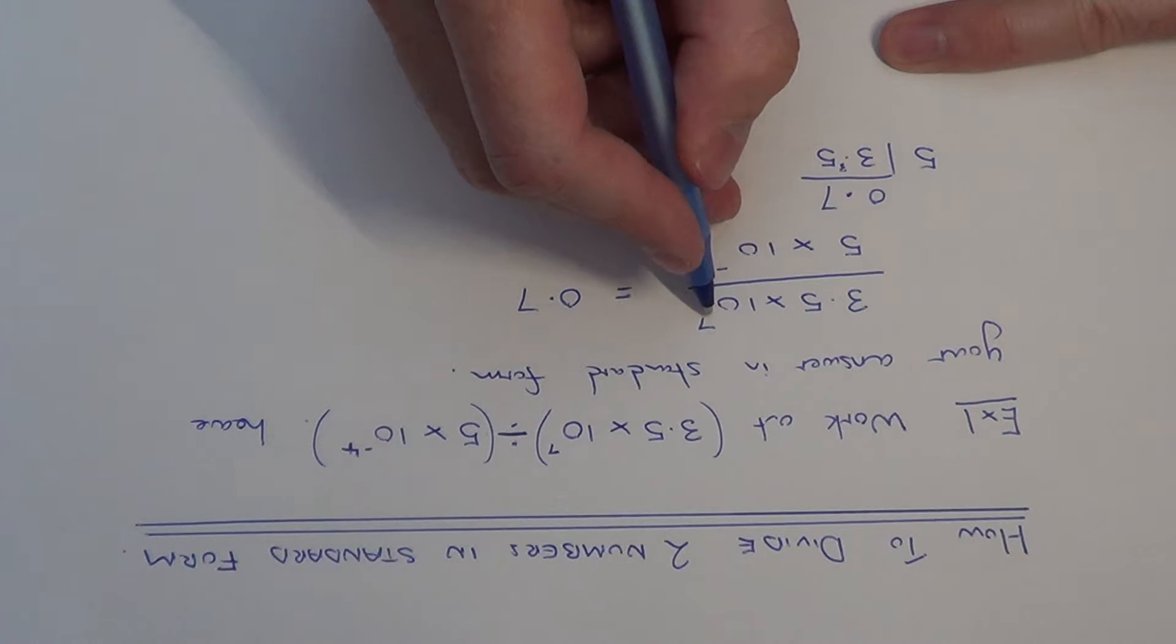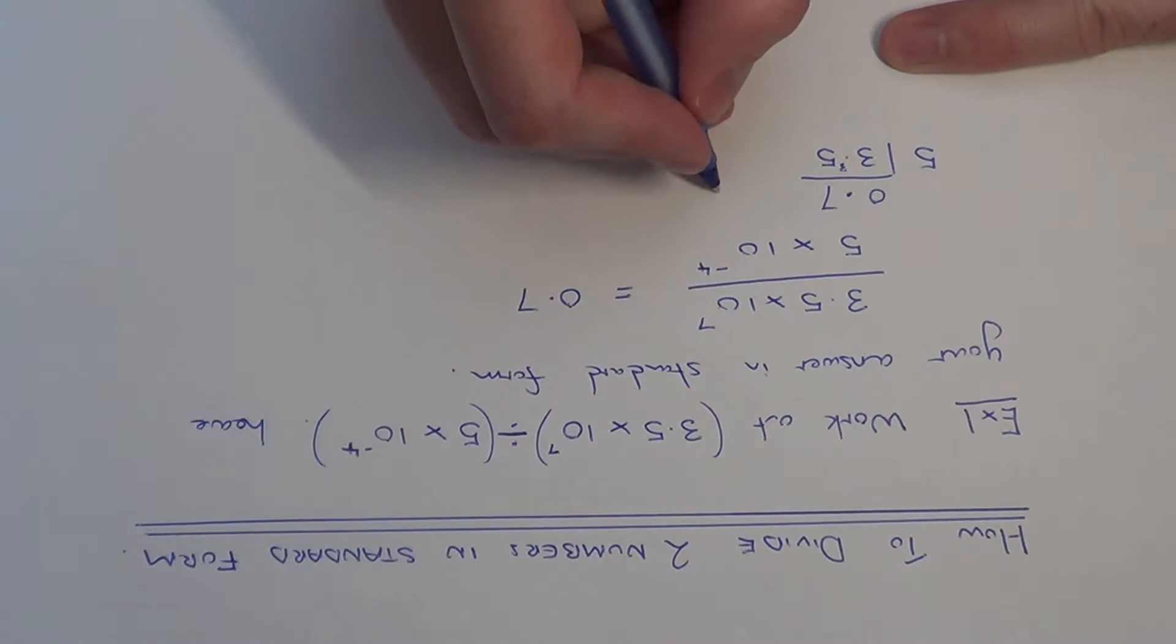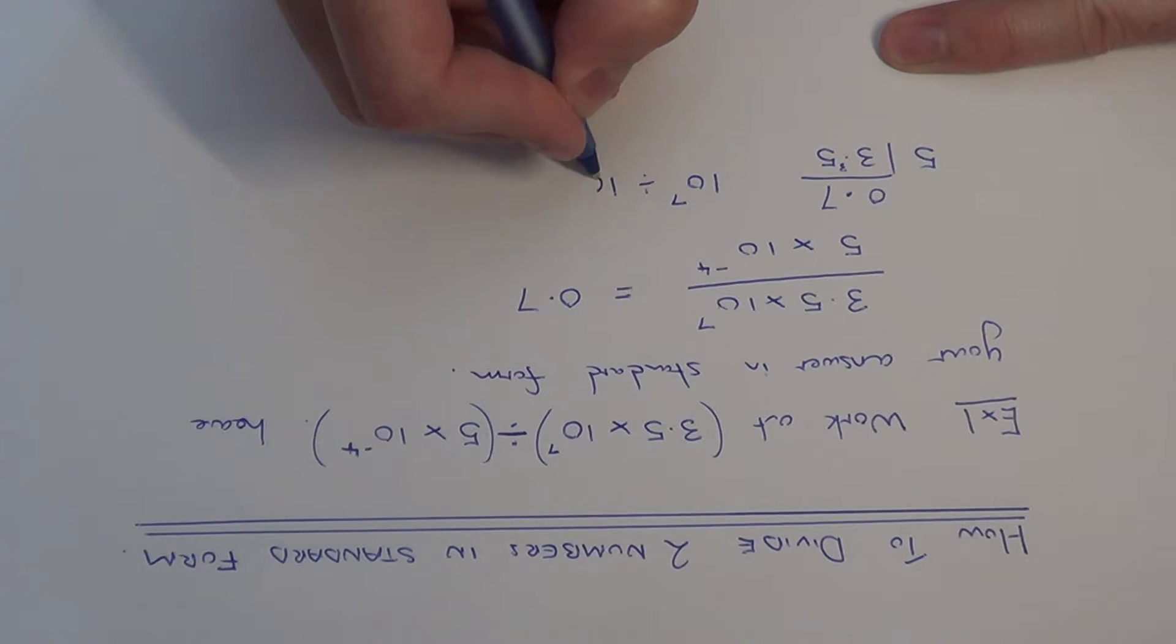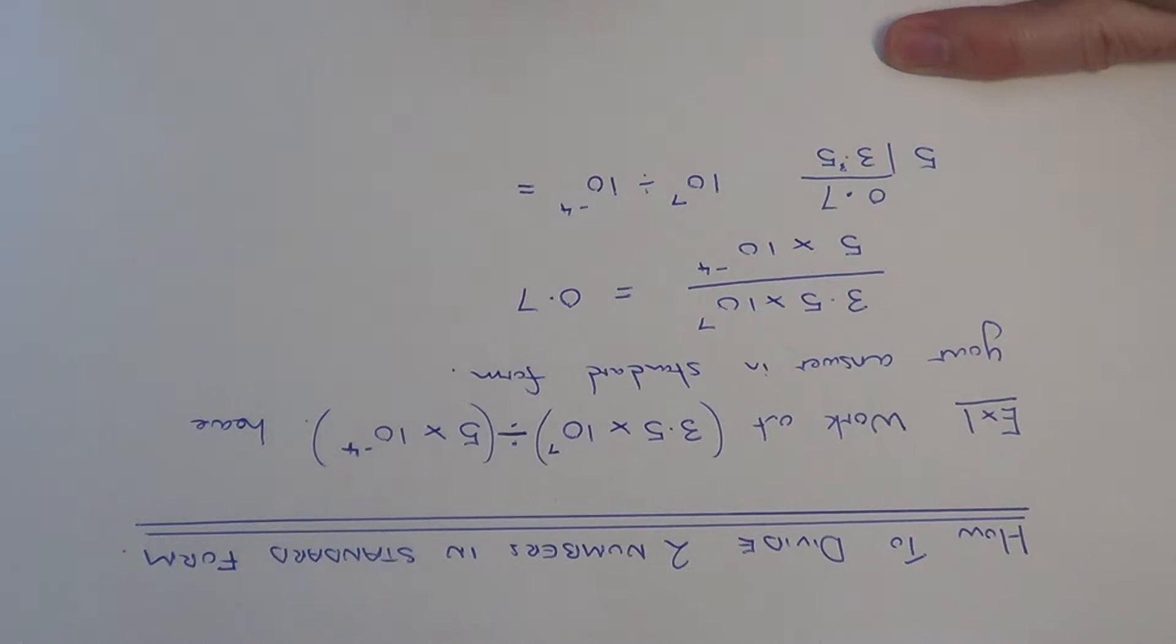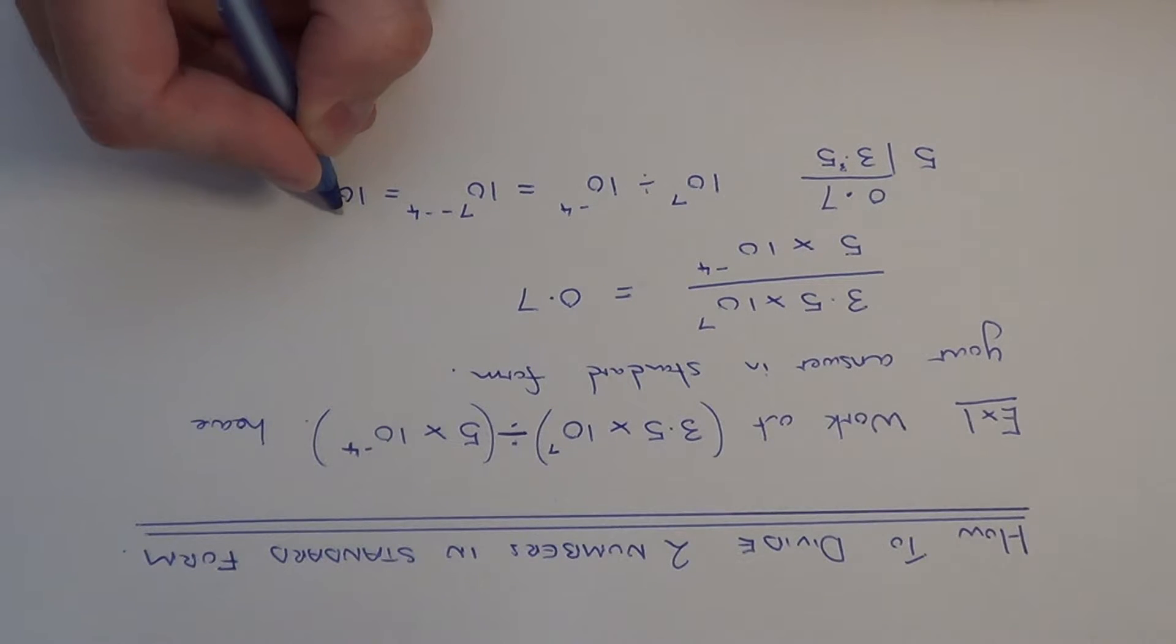The next thing we need to do then is divide the powers of 10. So we've got 10 to the power of 7 divided by 10 to the power of minus 4. And if you remember your rule for powers for a division, you'd actually take away the powers when you divide. So we've got to do 10 to the power of 7 take away minus 4. So this is the same as 10 to the power of 7 plus 4, which is 10 to the power of 11.